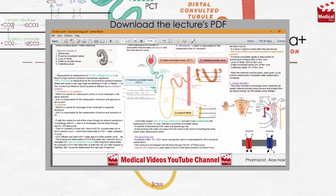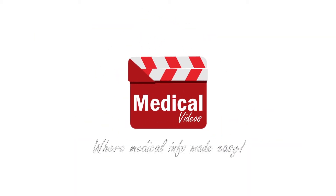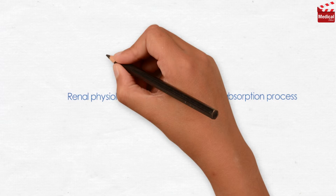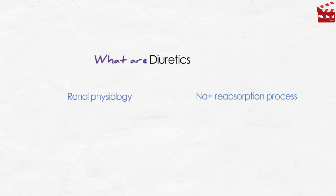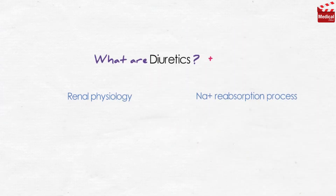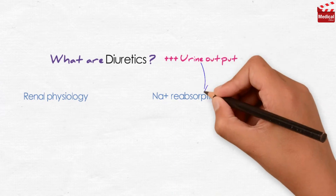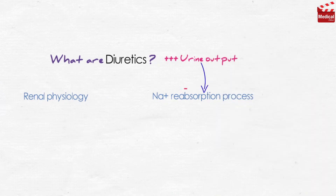The PDF of this lecture will be down in the description. Simply, what are diuretics? They are drugs that increase urine output by decreasing renal sodium reabsorption by different mechanisms, and this increases loss of sodium and water in urine.